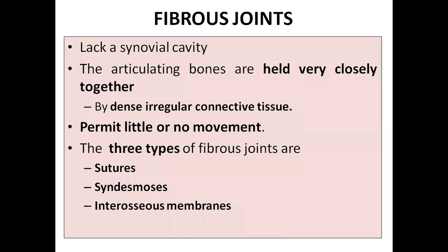The first one is a fibrous joint. In the fibrous joint, there is a lack of synovial cavity, and the bones are held together by dense irregular connective tissue. There is no movement in the fibrous joint. There are three types of fibrous joints: suture, syndesmosis, and interosseous membrane.